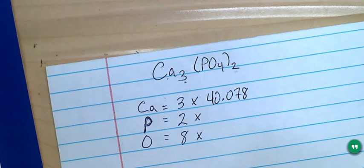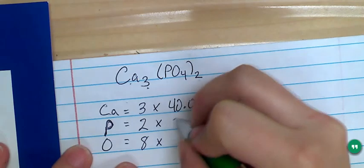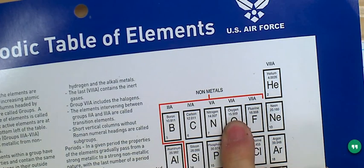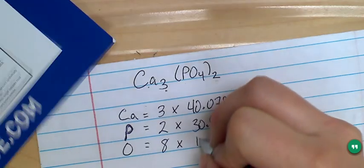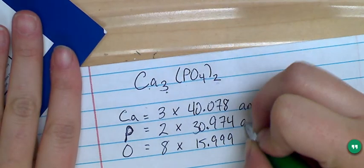The phosphorus is there at 30.974. So that's going to be 30.974. And then the oxygen is right here. It's 15.999. So 15.999. These are all in atomic mass units or AMUs.